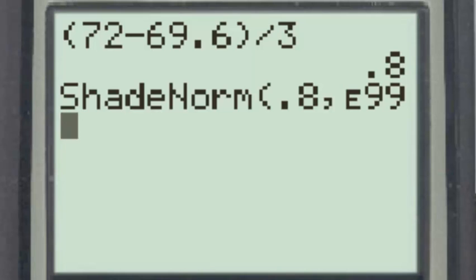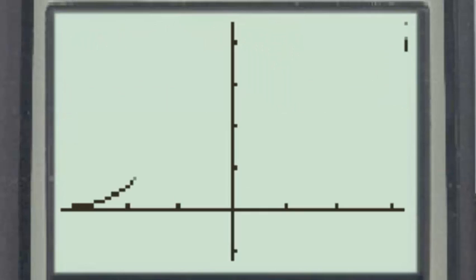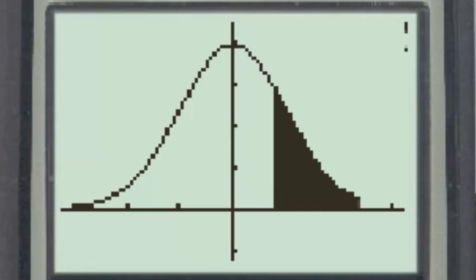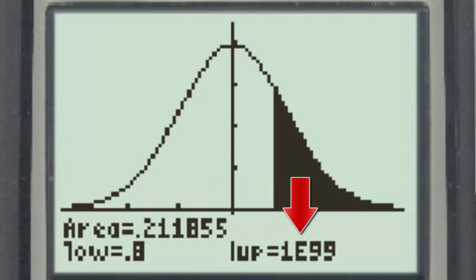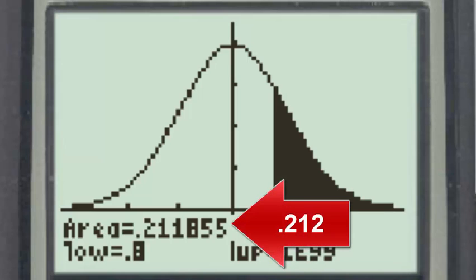Now when we click enter, the calculator again draws the distribution and shades the area from a z-score of 0.8 up to infinity. The probability shown is the probability that a participant in the study would have a height of more than 72 inches. To three significant figures, our answer would be 0.212.